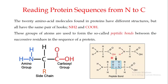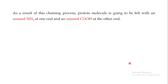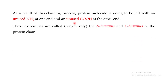For example, looking at this figure, if this is the first amino acid and this is the last amino acid in the primary sequence of the protein, the amino group at one end is unused and the carboxyl group at the other end is unused. These extremities are respectively called the N-terminus — the unused amino group end — and the C-terminus — the unused carboxylic end of the protein chain.